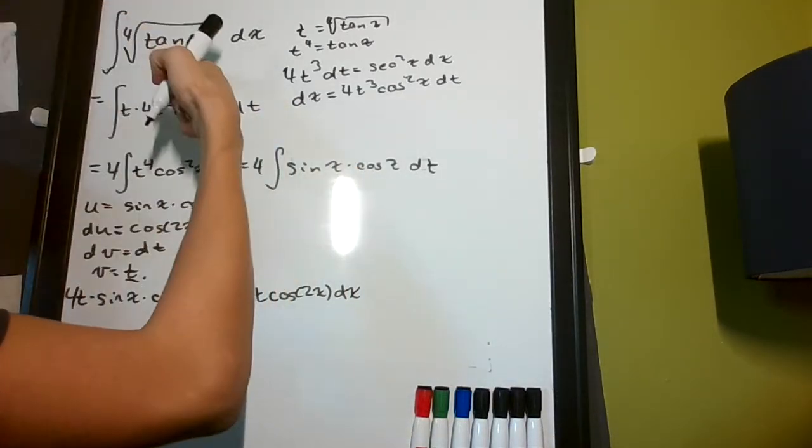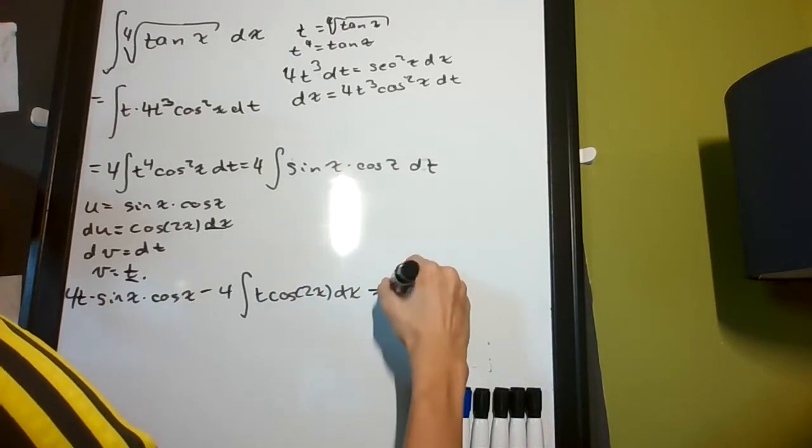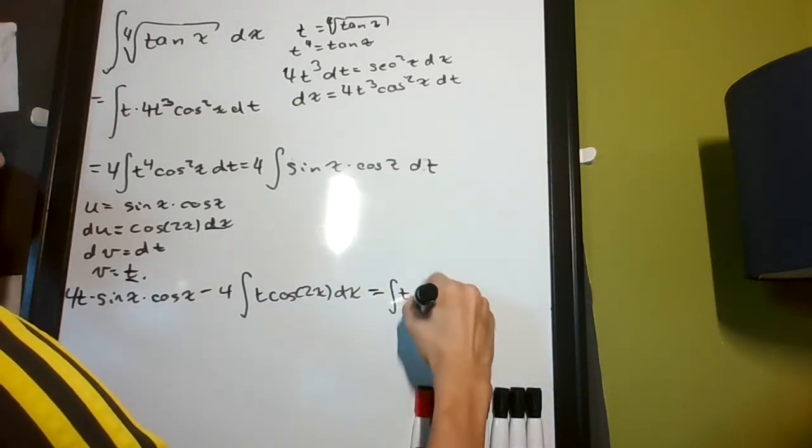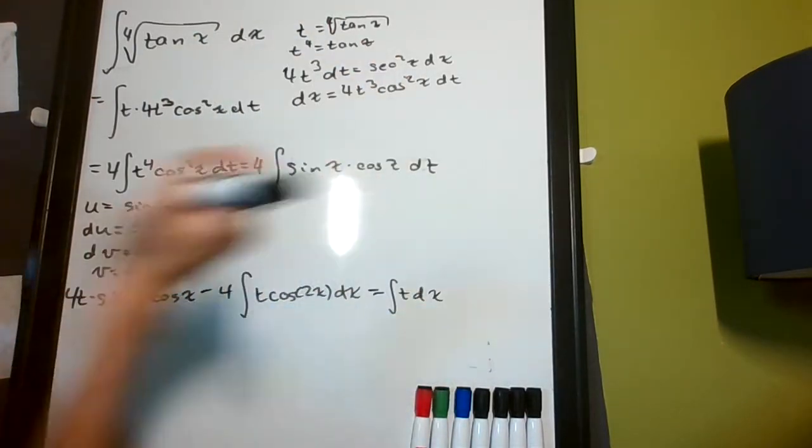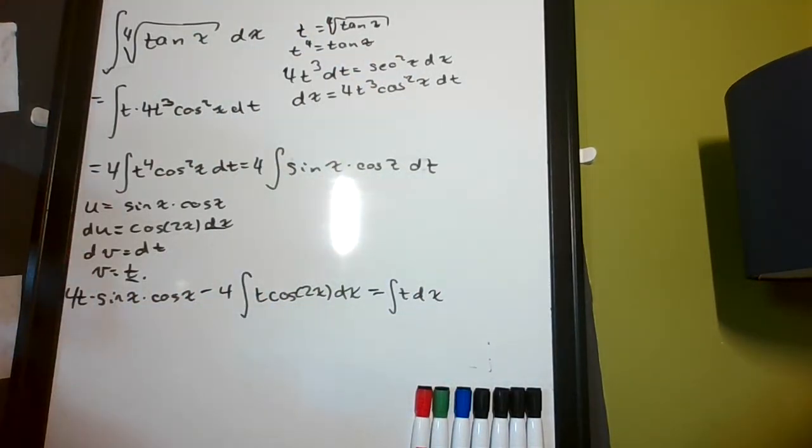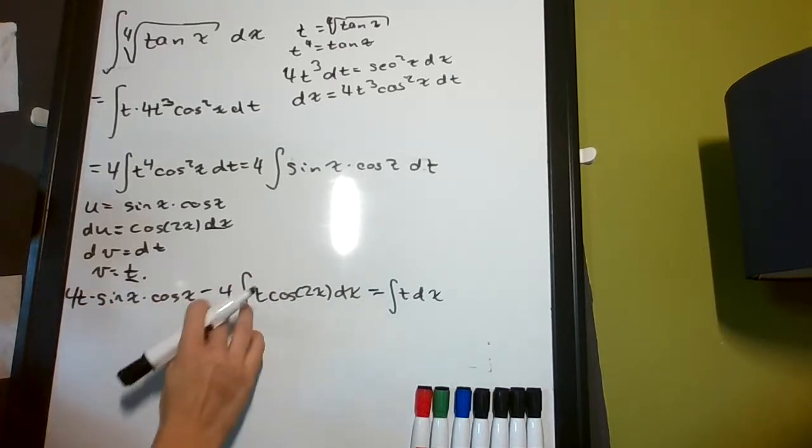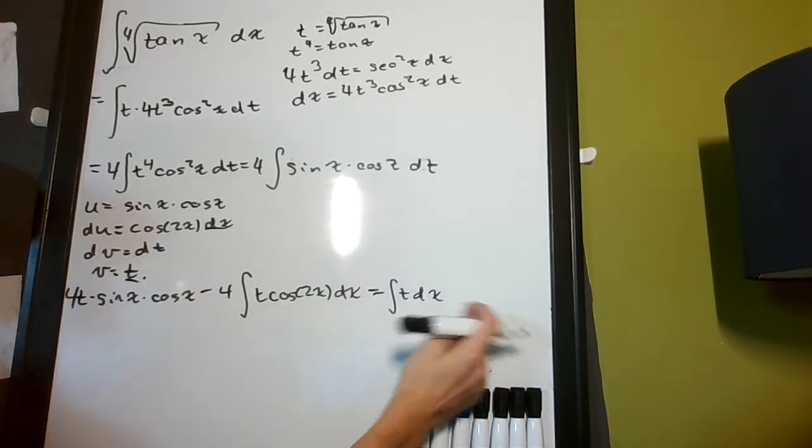But, remember what this is, it's just the integral of t dx, right? Because that's t, and there's dx. Okay, let's add 4 times this on both sides.